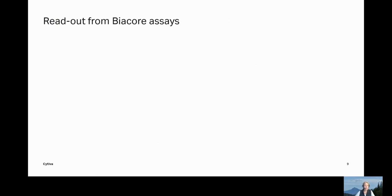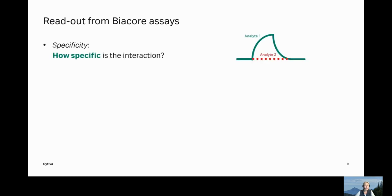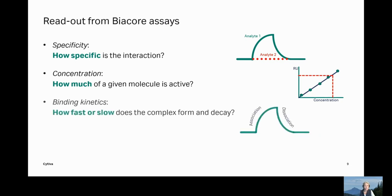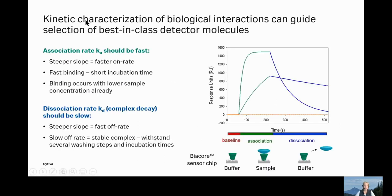There are several readouts possible from Biocore assays. Specificity — how specific is the interaction for one or the other analyte, which you recognize if there's a binding response or not. How much of a given molecule is active, because only functional molecules show the respective binding. And binding kinetics can be determined — how fast or slow does the complex form or decay.